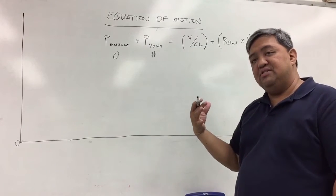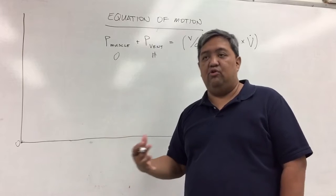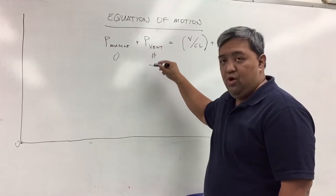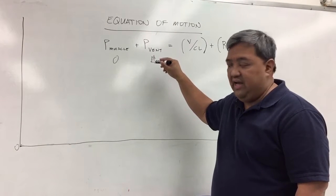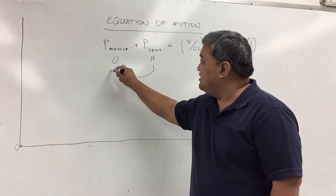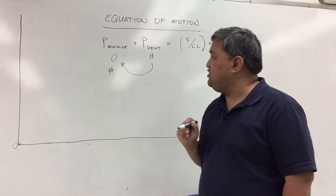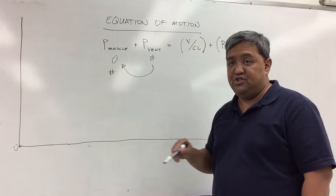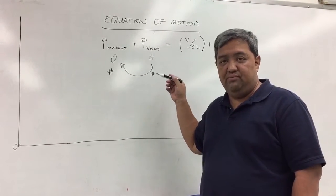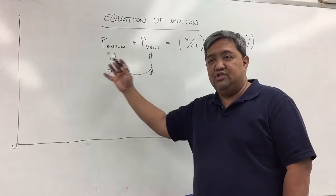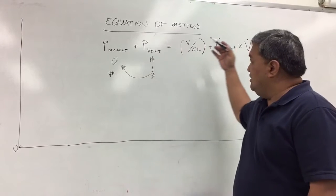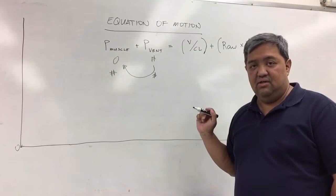As the patient is getting off the ventilator or in the weaning process, the workload of the ventilator is now being transferred to the patient. This means there is pressure being generated by the patient, and some pressure being generated by the ventilator. These two work hand in hand to overcome the resistance or compliance of the lungs.